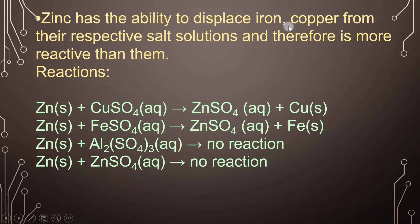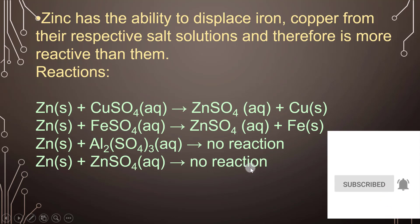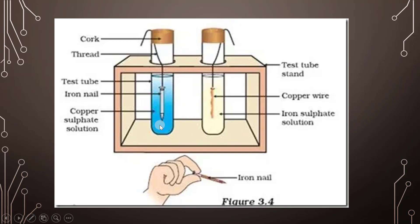Zinc has the ability to displace iron and copper from their respective salt solutions, meaning zinc is more reactive than both. The equations are: Zn + CuSO₄ → ZnSO₄ + Cu, and Zn + FeSO₄ → ZnSO₄ + Fe, but Zn + Al₂(SO₄)₃ shows no reaction. When an iron nail is placed in copper sulfate solution, it converts to iron sulfate solution and a copper layer forms on the iron nail.